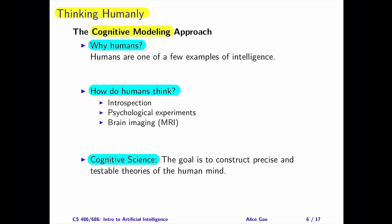The goal of cognitive science is to develop precise and testable theories of the human mind. To recap, the first definition of AI, cognitive modeling, aims to develop a system that thinks like humans. This definition uses humans rather than rationality as the benchmark and aims to model thoughts rather than behavior.